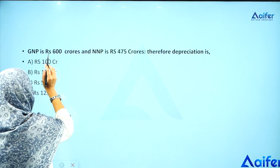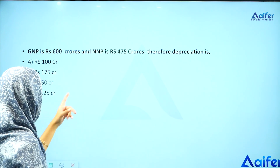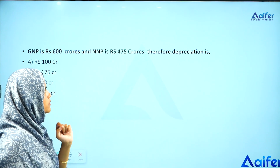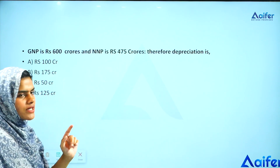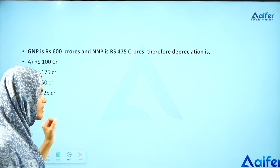Next question: GNP is equal to 600 crores, NNP is equal to 475 crores. What is the depreciation? We have already said it — it is simple.